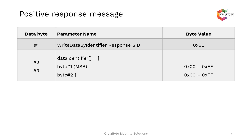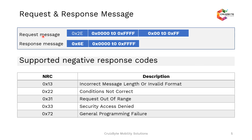The positive response for service 0x2E is 0x6E, since the value 0x40 is added to the service ID. It returns the data identifier of 2 bytes — ranging from 0x0000 to 0xFFFF — back to the client or diagnostic tester. So the request format is 0x2E followed by 2 bytes of data identifier and a minimum of one data record, sent from the diagnostic tester to the ECU. The ECU responds with 0x6E followed by the data identifier number.